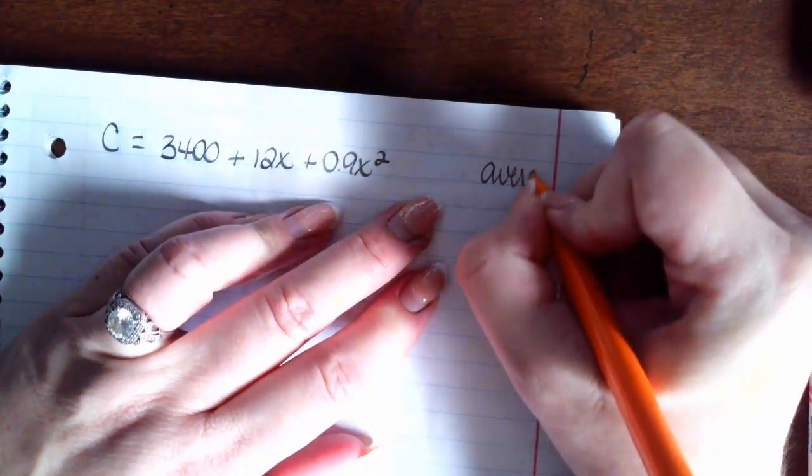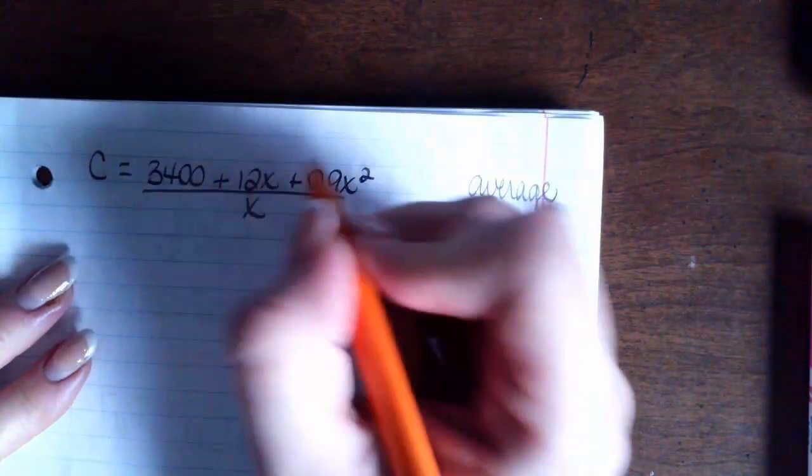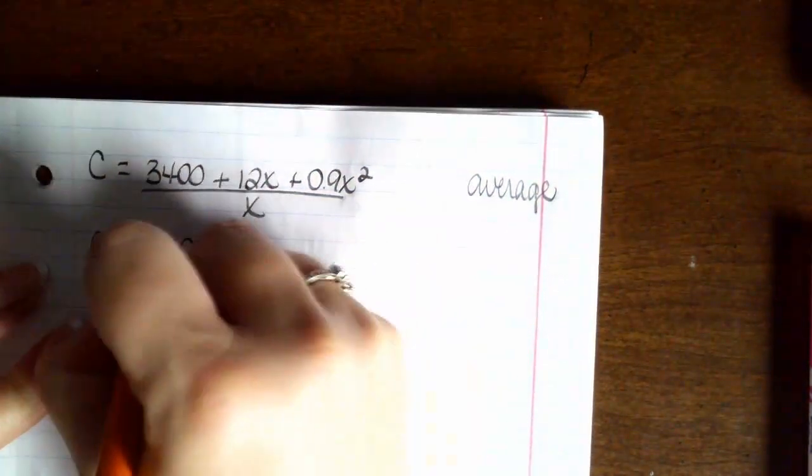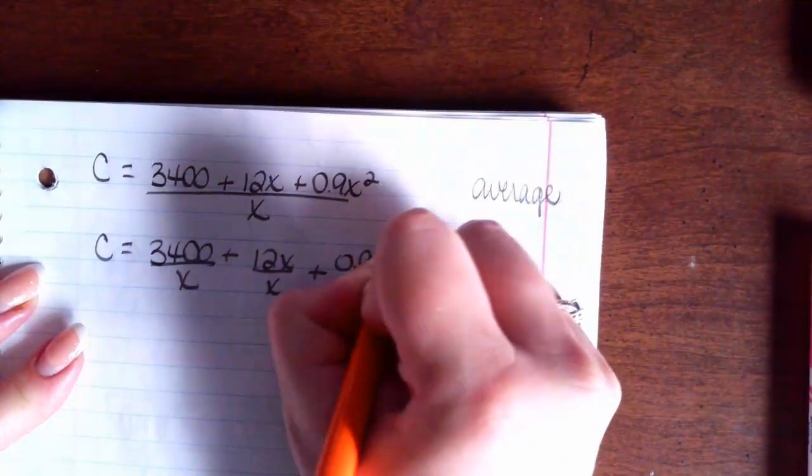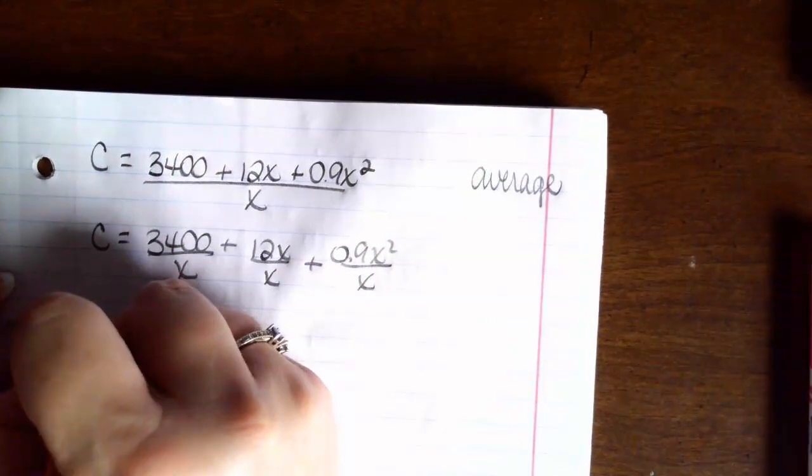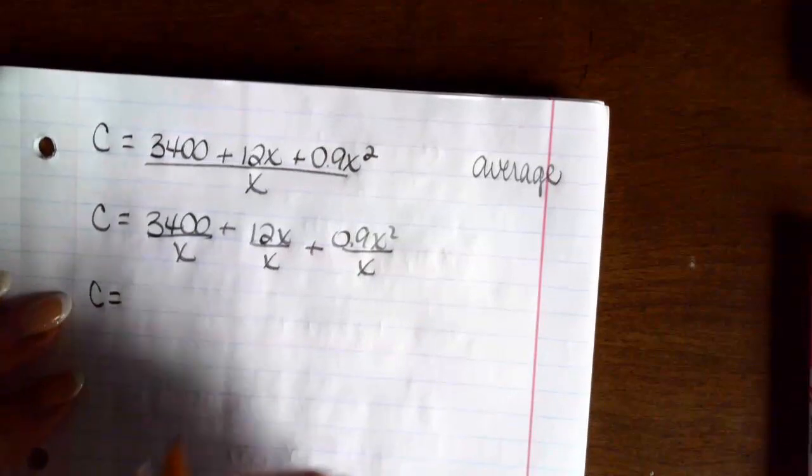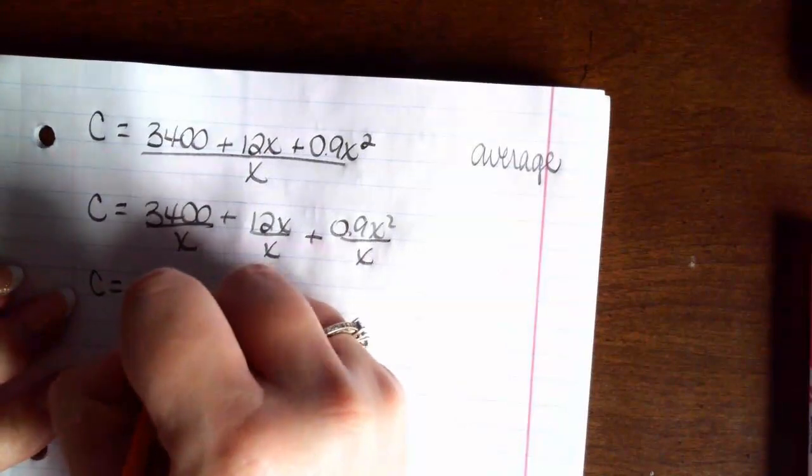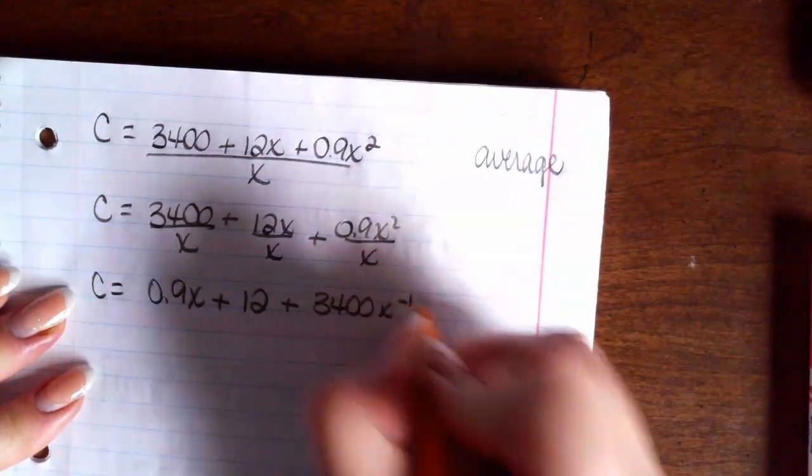So anytime we see the word average, we're going to divide by x. So divide everything by x. That gives me C equals 3,400 over x plus 12x over x plus 0.9x squared over x. So my cost function is going to be, I'm going to put this in descending order. So I'm going to put this first: 0.9x plus 12 plus 3,400x to the negative 1.